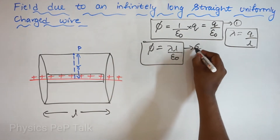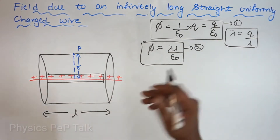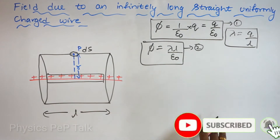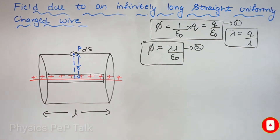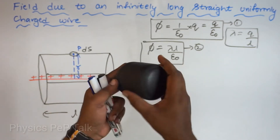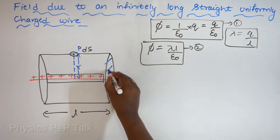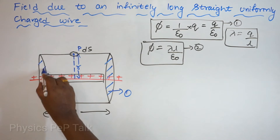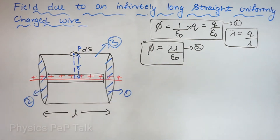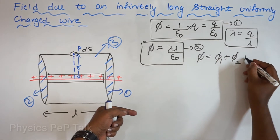Now this is the extended form of Gauss law. To determine the electric flux at point P due to an infinitely long wire, I have considered a small elemental area dS. In a cylinder there are three surfaces: one curved surface and two flat surfaces. I will divide this cylinder into three regions — region 1, region 2, and region 3. The total electric flux through the cylinder is phi equals flux through region 1 plus flux through region 2 plus flux through region 3.